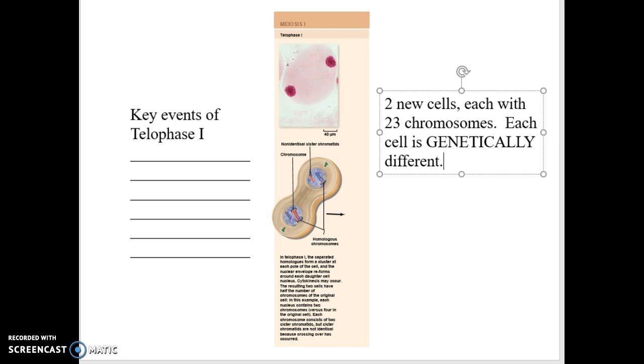Each cell is genetically different. They're unique, they're different than the other cell because of that prophase 1 and the crossing over event.